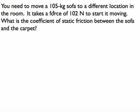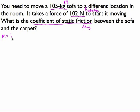Let's try and do some friction calculations. This one's a static friction calculation. We have a sofa whose mass is 105 kilograms, and we need to move this sofa. It says it takes a force of 102 newtons to get it moving, so this is our static friction force. What is the coefficient of static friction — that's μ-static — between the sofa and the carpet? Let's write down what we know: mass is 105 kilograms, and our F-static is 102 newtons.